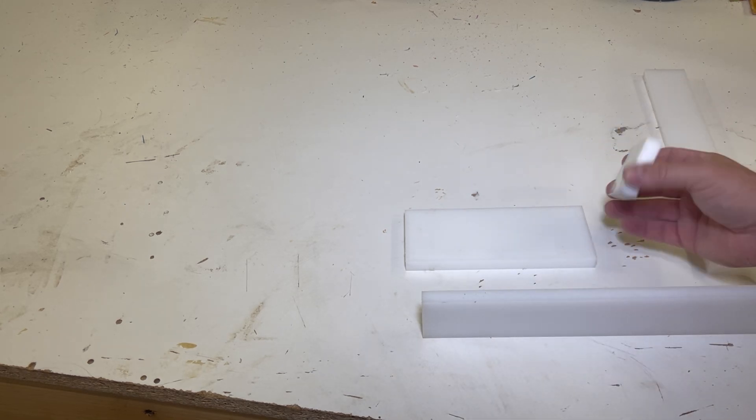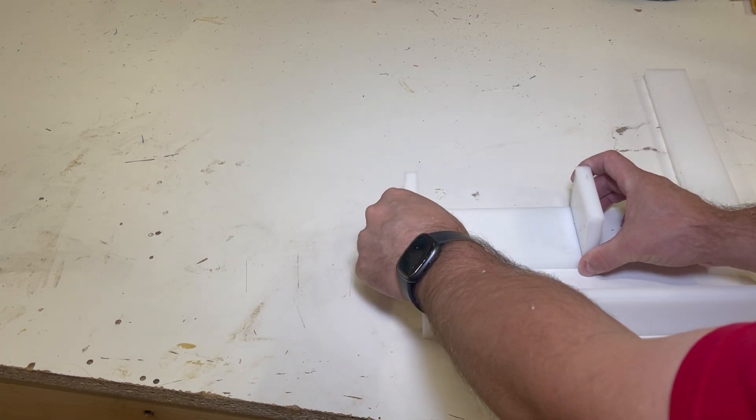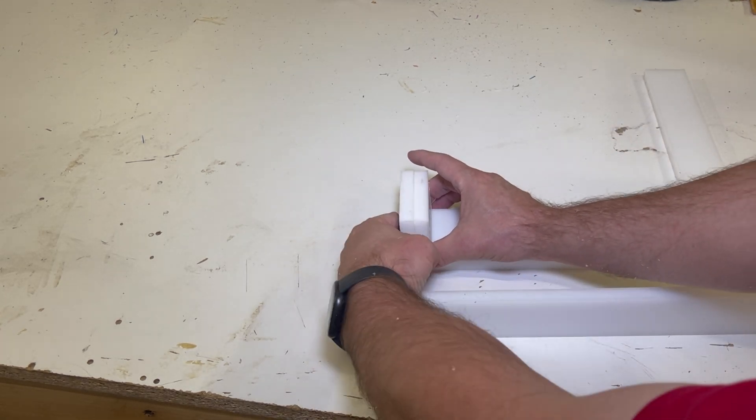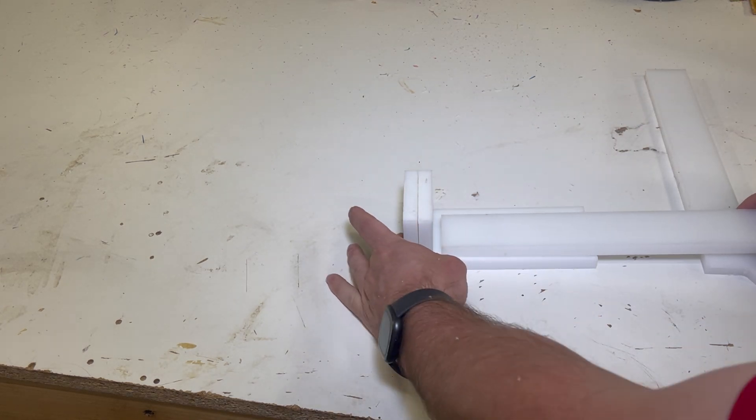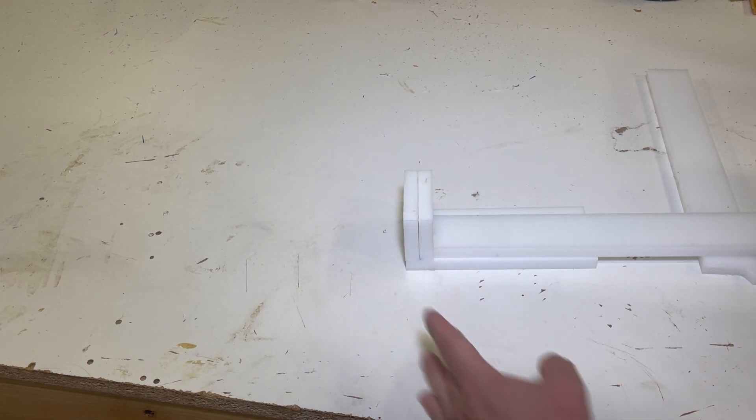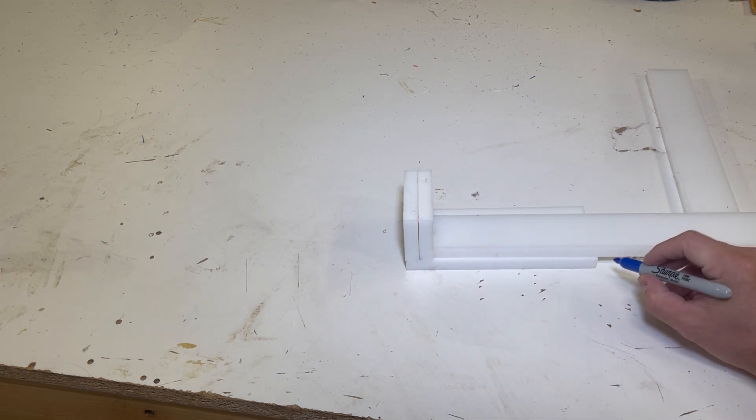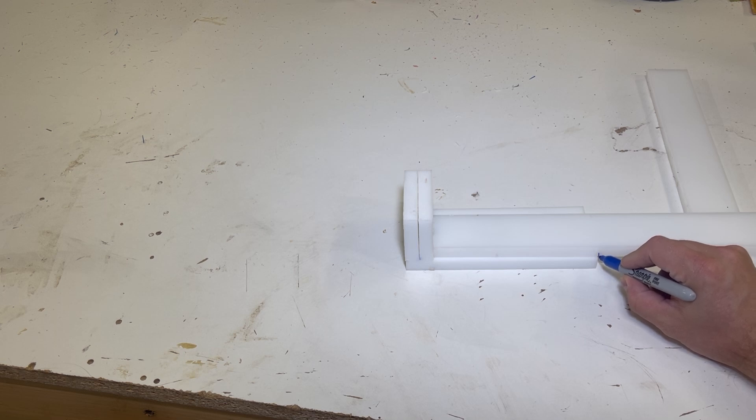One way to do this is where we're not having to measure. These ones go on the sides, but we can do like this. And that'll take up the space on both sides. And then make us a line here and then we can cut it kind of fat and then sneak up on it.